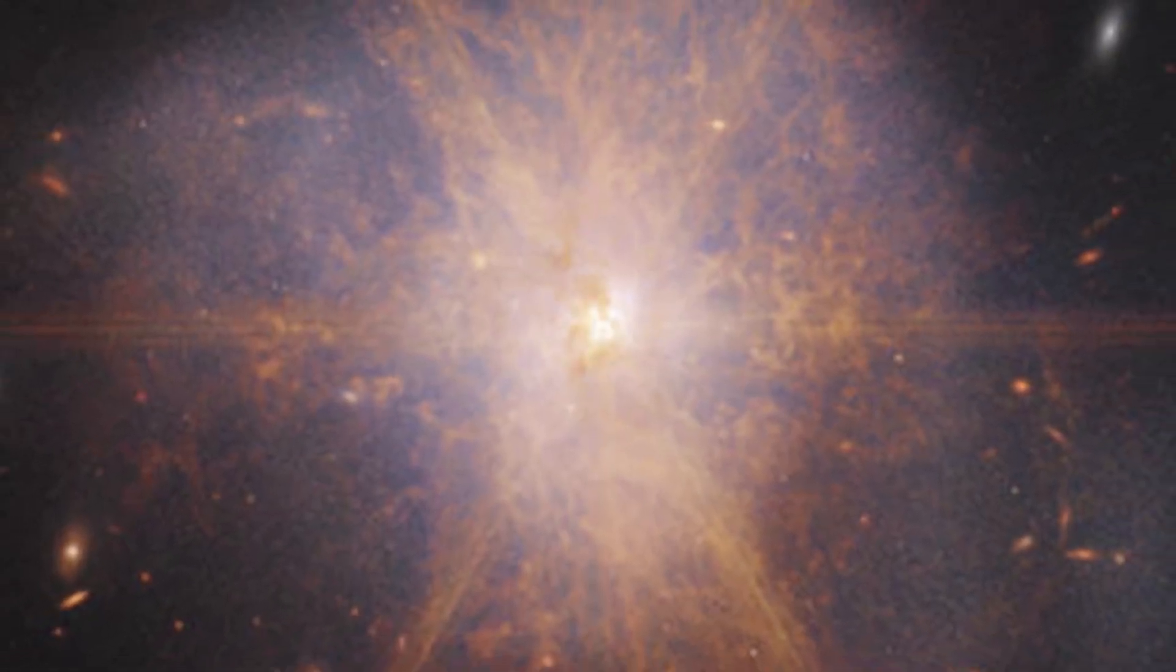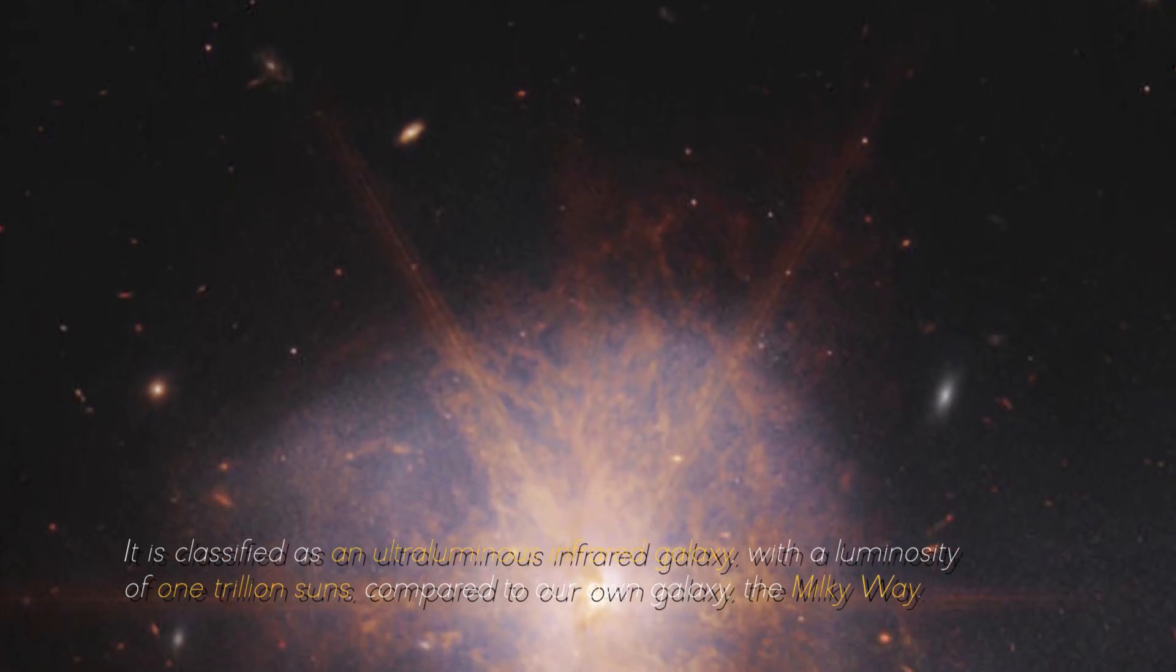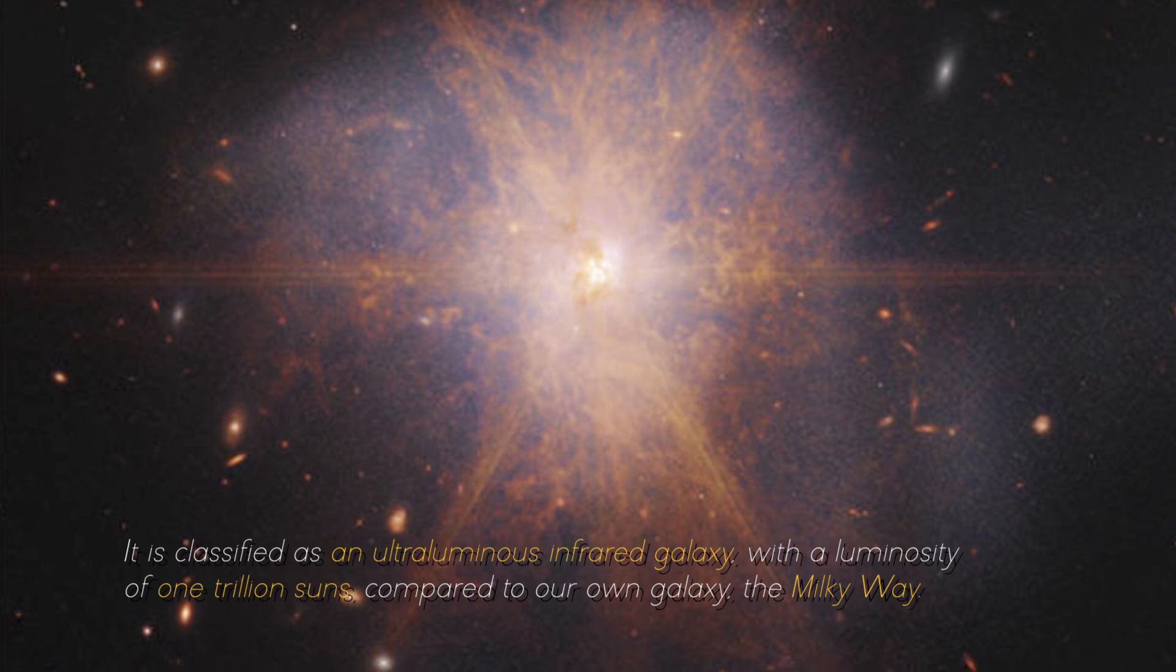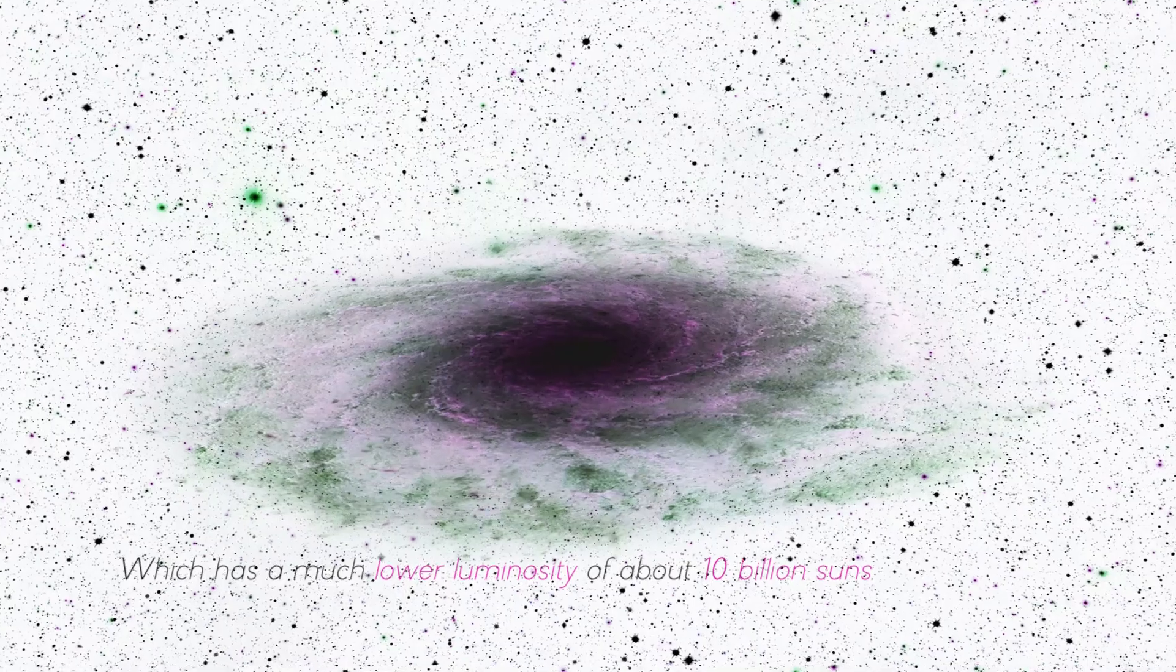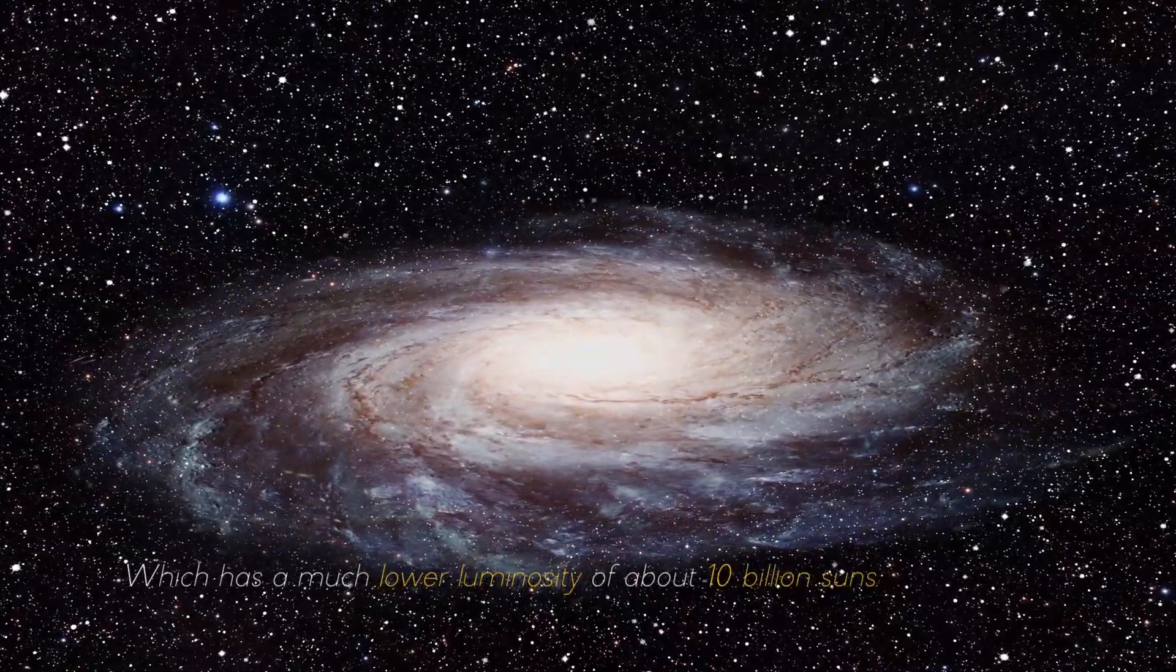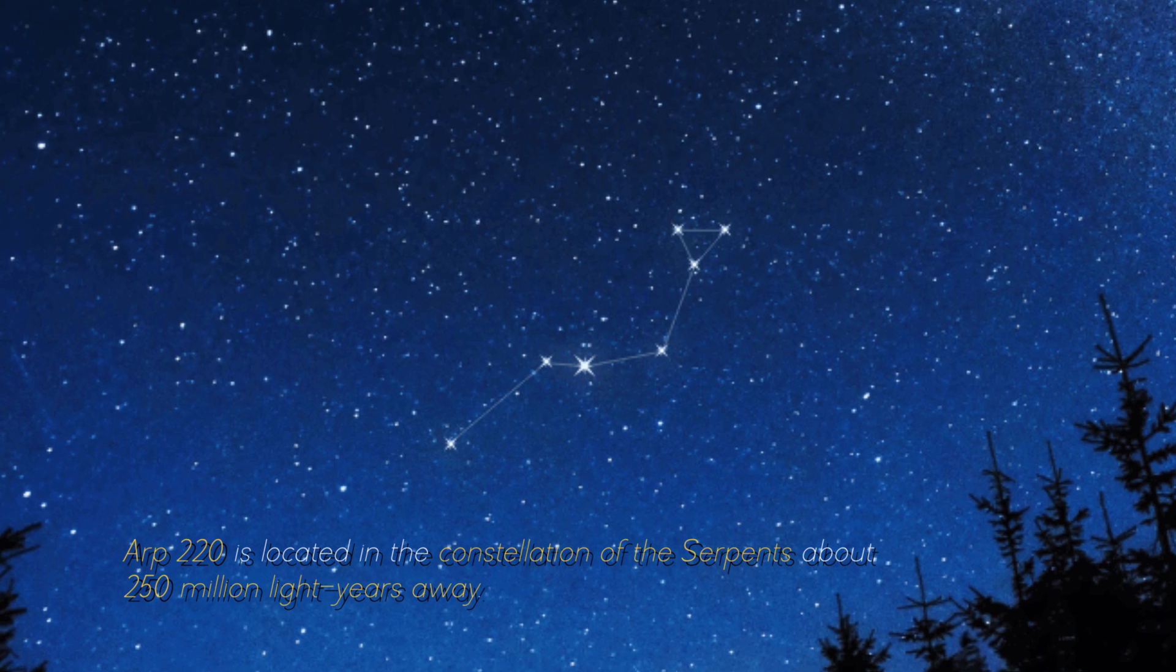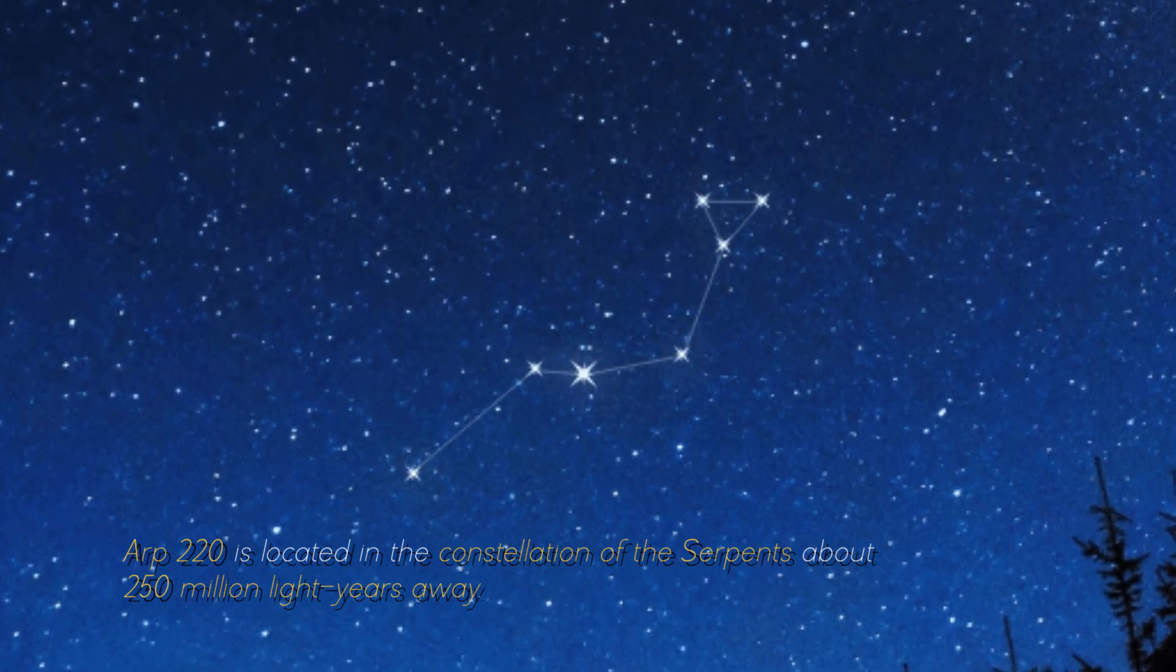Making it perfect for observation by the James Webb Space Telescope, it is classified as an ultra-luminous infrared galaxy with a luminosity of 1 trillion suns compared to our own galaxy, the Milky Way, which has a much lower luminosity of about 10 billion suns. ARP 220 is located in the constellation of the Serpents, about 250 million light-years away.